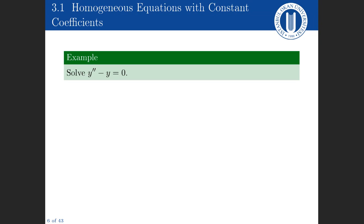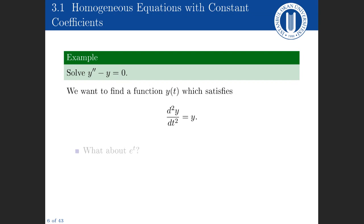First example: solve y double prime minus y equals zero. We want a function y such that when we differentiate it two times we still have the same function. We know e to the power t — differentiating it once or twice still gives e to the power t — so it satisfies this equation. What about e to the power minus t? Differentiating once gives minus e to the minus t, differentiating again gives plus e to the minus t. So this function also satisfies the differential equation.